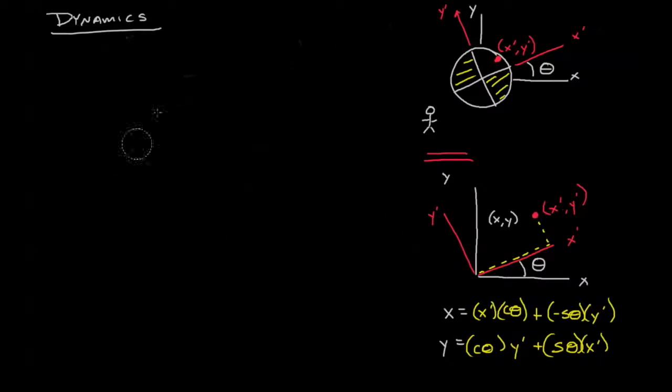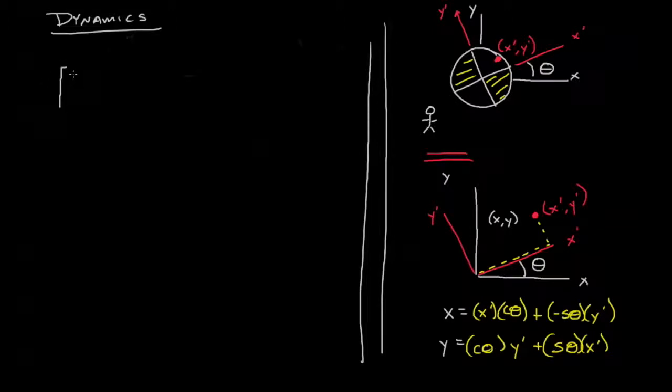Let's erase some things here and get some space. We have a lot of information in this equation. One way to use a lot of information is to put it into a matrix form. And if we do that, we can rewrite these two equations as x, y equals cosine theta minus sine theta, sine theta cosine theta, times x prime, y prime.